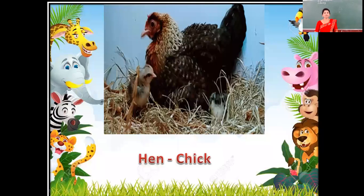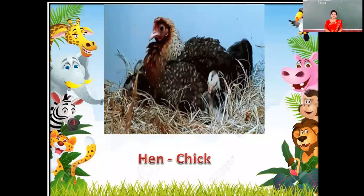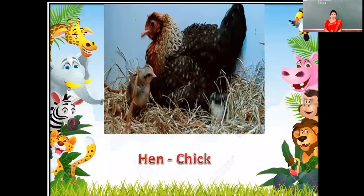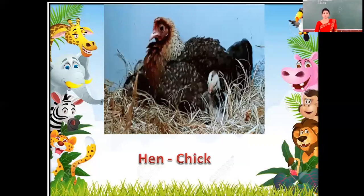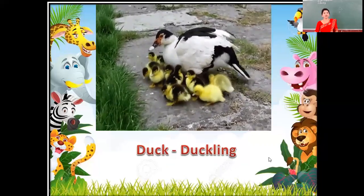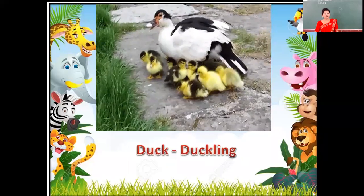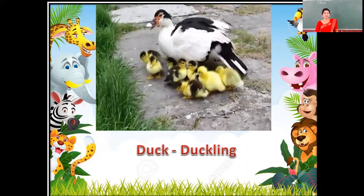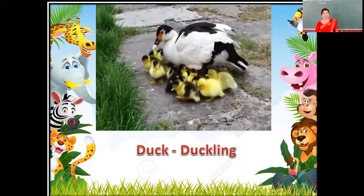Another feature is of hen and chick. Young ones of hen is chick. H-E-N, hen. C-H-I-C-K, chick. Next feature is of duck and duckling. Young ones of duck is duckling. D-U-C-K, duck. D-U-C-K-L-I-N-G, duckling.